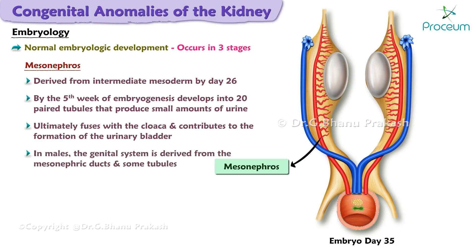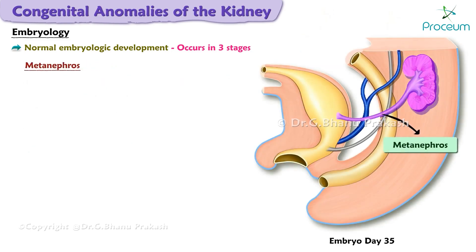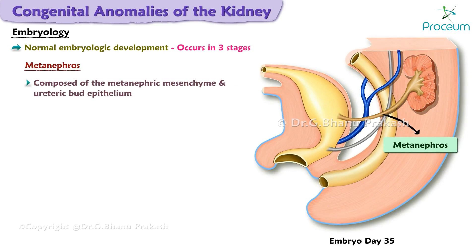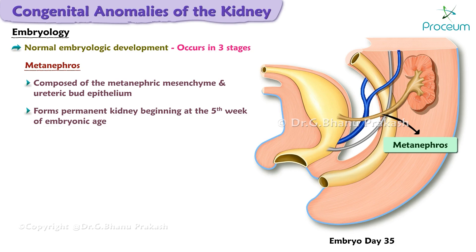In the male, the genital system is derived from the mesonephric ducts and some tubules. The metanephros, which is composed of the metanephric mesenchyme and ureteric bud epithelium — the caudal portion of the mesonephric duct — is the last stage of renal development and forms the permanent kidney, beginning at the fifth week of embryonic age.